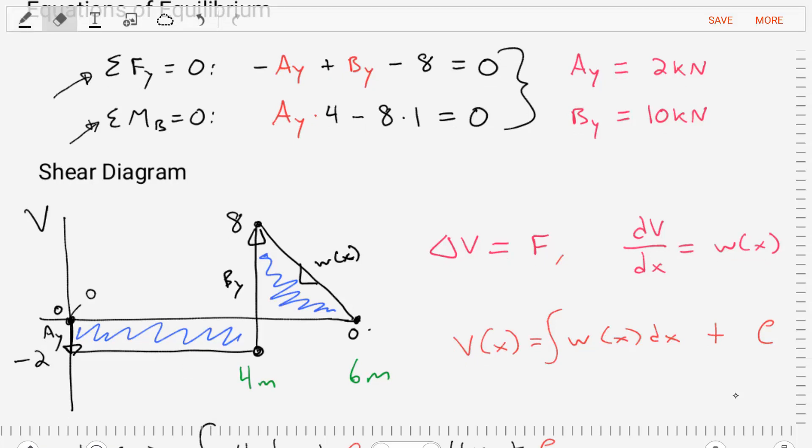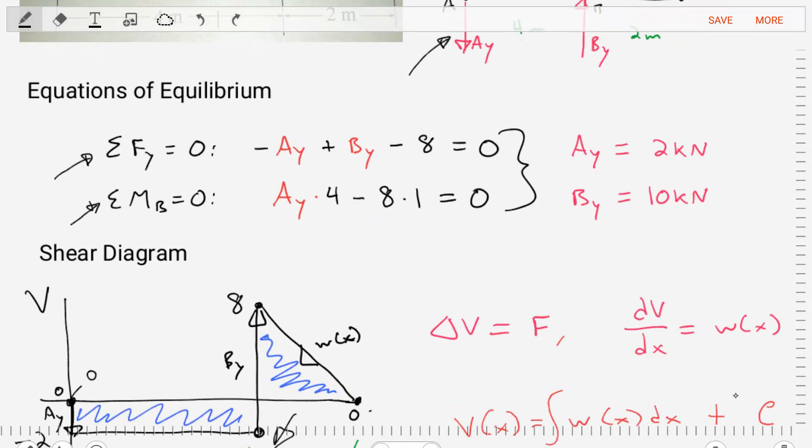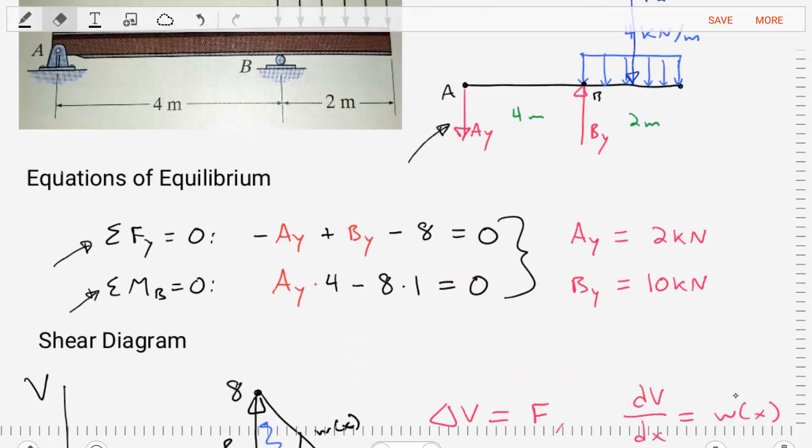Once we hit 4 meters, we encounter BY. BY is upwards, and it has a magnitude of 10 kN. So we are going to do a step change of 10 kN to get us to a value of 8 on our shear diagram. Remember, we're using this equation that gives us the step change. So now let's see what happens just to the right of point 4.